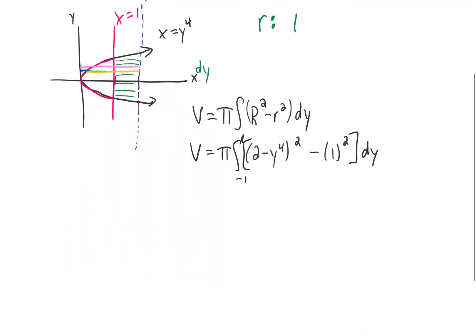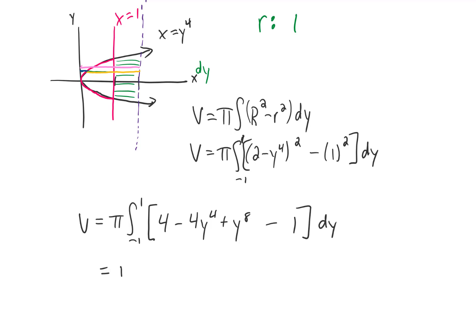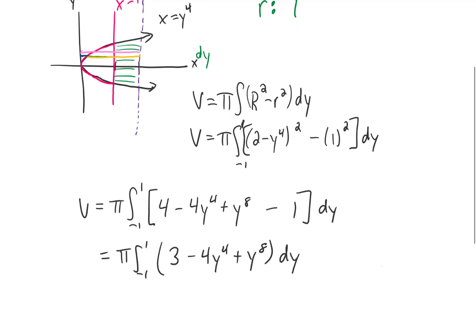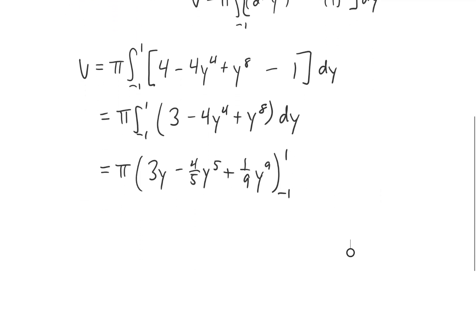So let's simplify this thing and integrate. Foiling this first term out and squaring 1 gives us this integral, which we can simplify just by combining a couple of like terms. And now we can integrate, and we can plug in the limits of integration.